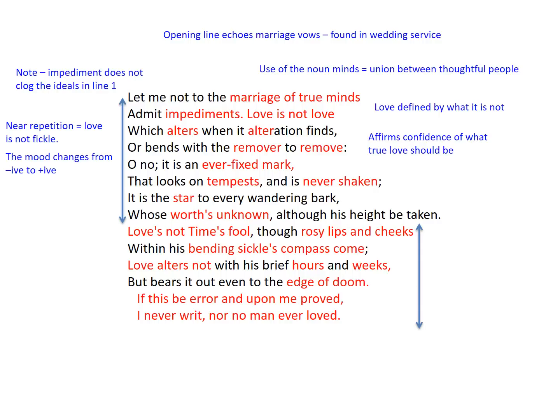The tone moves from lines four to five from negative to positive. We move on to what the poet sees love to be, now that we've considered what it isn't. 'Ever fixed' is situated in the central location within the layout of this poem, which resonates the idea that love is constant and at the heart of this poem. The violent imagery in line six of tempests that do not shake the foundations of this love affirm that love defies the odds, and the phrase 'never shaken' amplifies the idea that this relationship is constant.